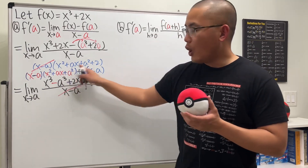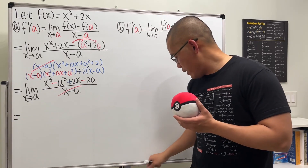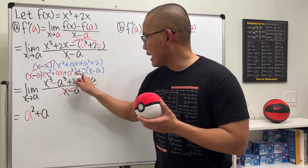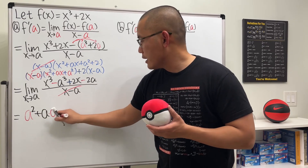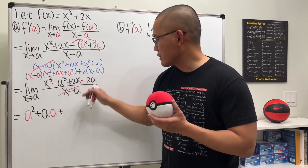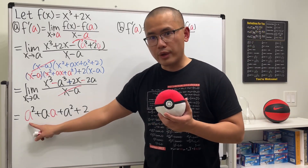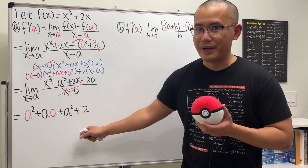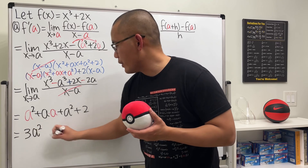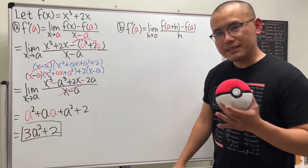Now we substitute x = a into all the remaining x's. We get a² for the first term, then a times a which is another a², then plus a² from the last term, and don't forget the plus 2. So we have a² + a² + a² + 2. Altogether that's three a squared, giving us f prime of a equals 3a² + 2.